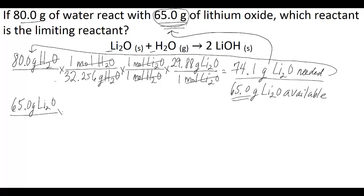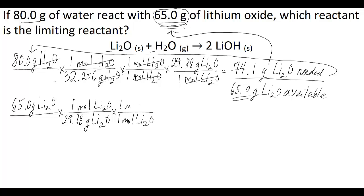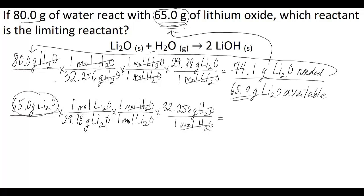You'd get that into moles using the molar mass of lithium oxide per one mole. Then you relate moles of lithium oxide to moles of water using the reaction stoichiometry — it's one to one. Then you use the molar mass of water, which is 32.256 grams of water per one mole of water. This tells you how much water you'd need to fully react with those 65 grams of lithium oxide. All of your units cancel except for grams of water, which is what you want.